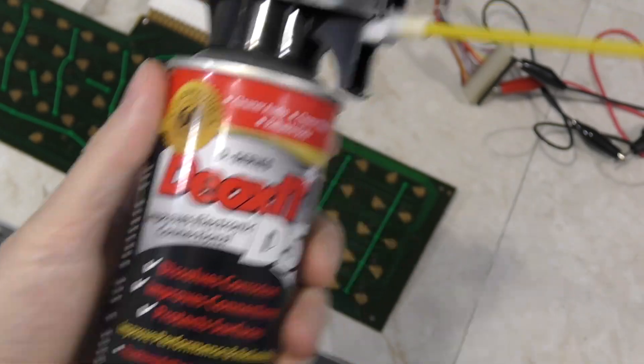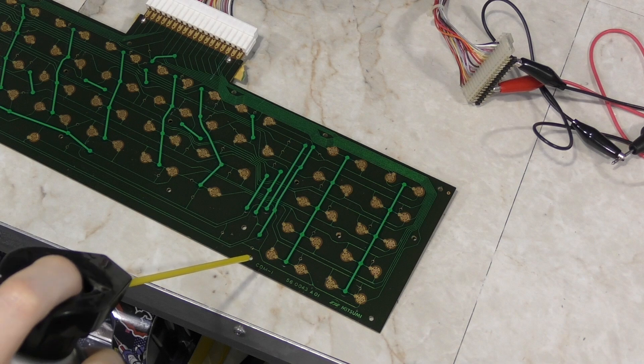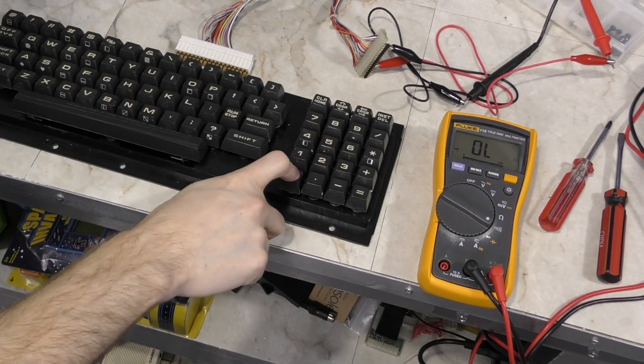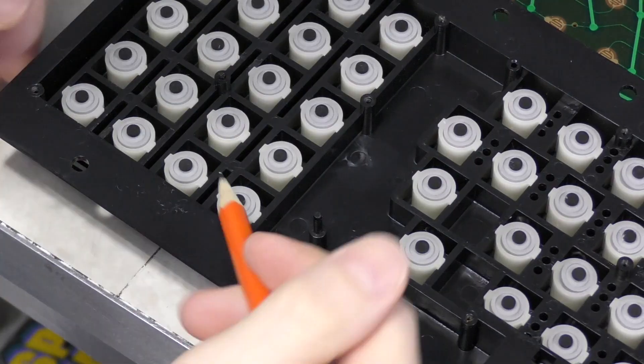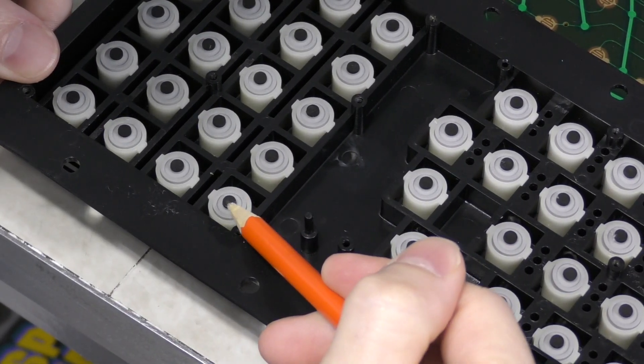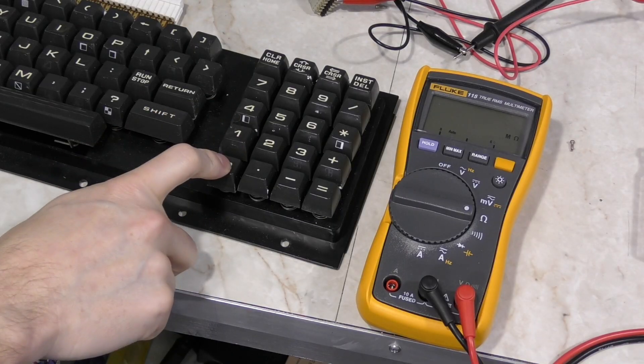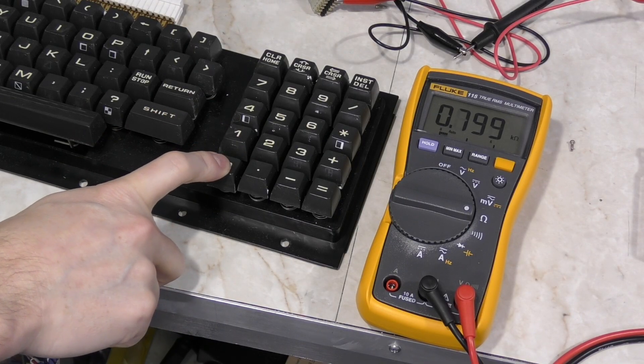At this point, I decided to try some of this deoxid to see if I could improve the conductivity that way. Testing again, I didn't really see any difference, so I turned to Google and many people suggested trying a pencil to add some carbon back to the rubber pad. Tried that, but it didn't work either, although there does seem to be less resistance now.